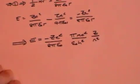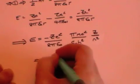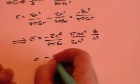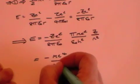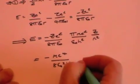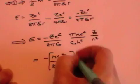Which comes to a rather startling minus m e to the fourth divided by 8 epsilon naught squared h squared times z squared over n squared.